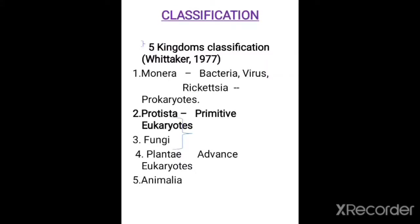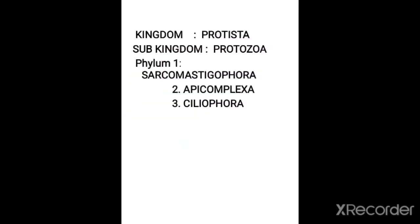In this video, we will discuss genus Trypanosoma. Before going to the actual topic, let us classify the organisms based on the R.H. Whittaker classification. We classify as five kingdoms: Monera, Protista, Fungi, Plantae, and Animalia. In the kingdom Protista, the sub-kingdom is Protozoa, which contains the phyla Sarcomastigophora, Apicomplexa, and Ciliophora.